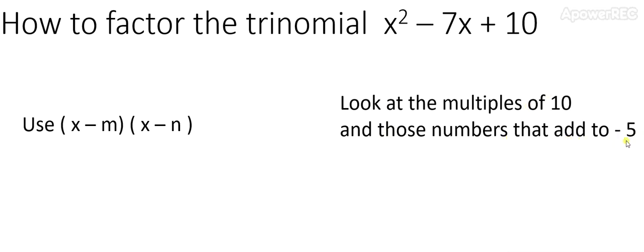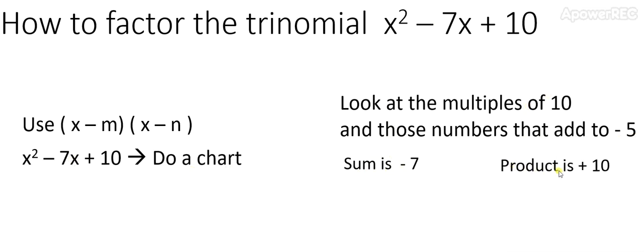So let's look at some numbers. Using a chart, which is helpful to organize our guess and check method, we recognize that the sum is negative 7, which is the middle term. And we recognize that the product is positive 10, which is the last term.